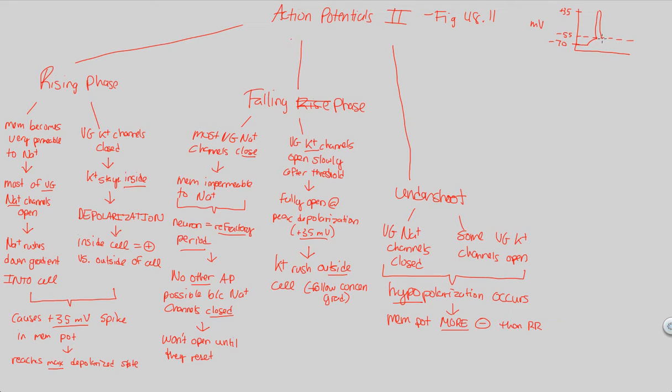So look what I'm going to do here. I'm going to undershoot this negative 70, and I'm going to continue falling, continue falling, and look what I'm doing. I'm going below negative 70, almost to the very bottom here. That's called the undershoot, what I just did. I didn't stop at negative 70 at resting potential.